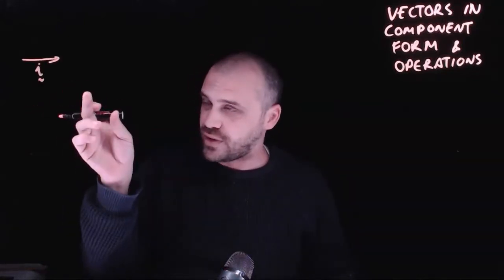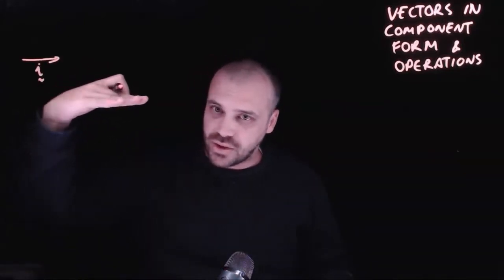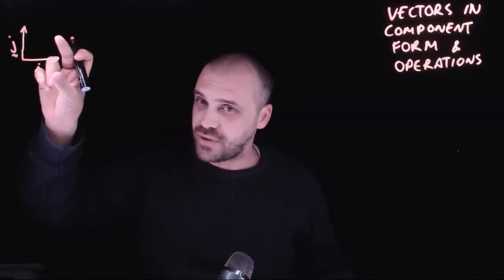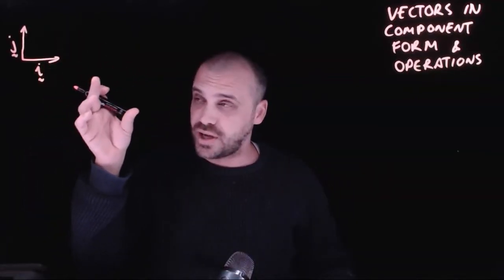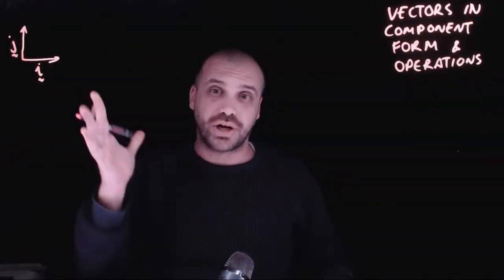The first one is the i vector, a small vector that is horizontal. The second one is the j vector, the same sized vector, but instead it's going straight up.